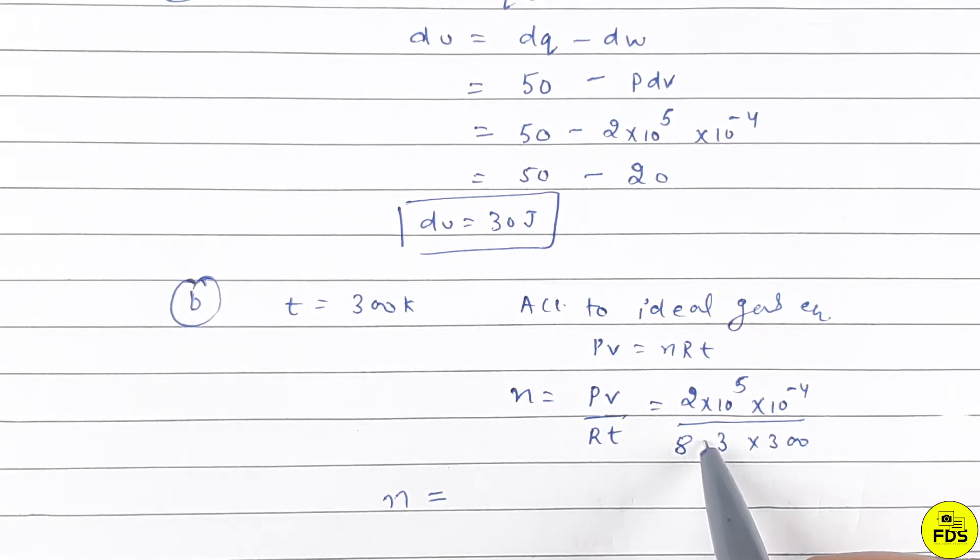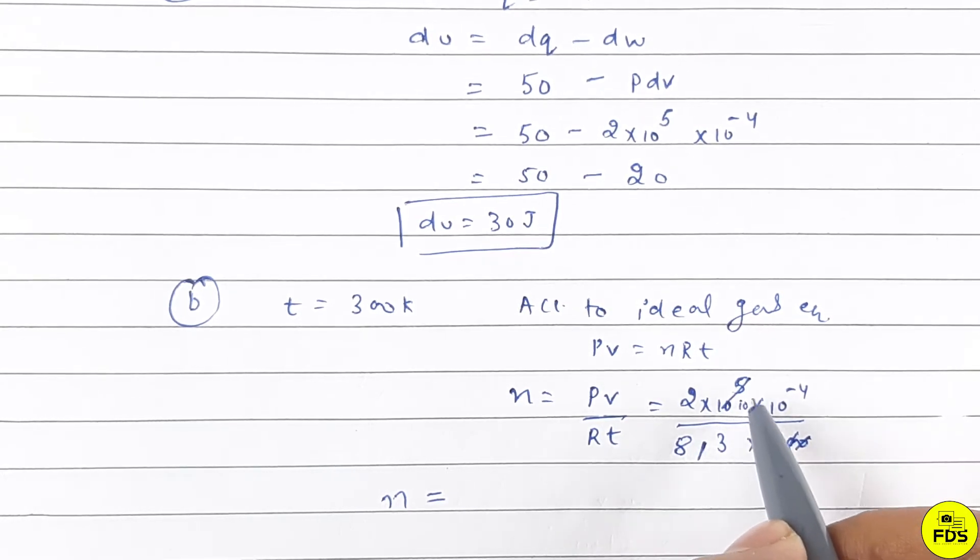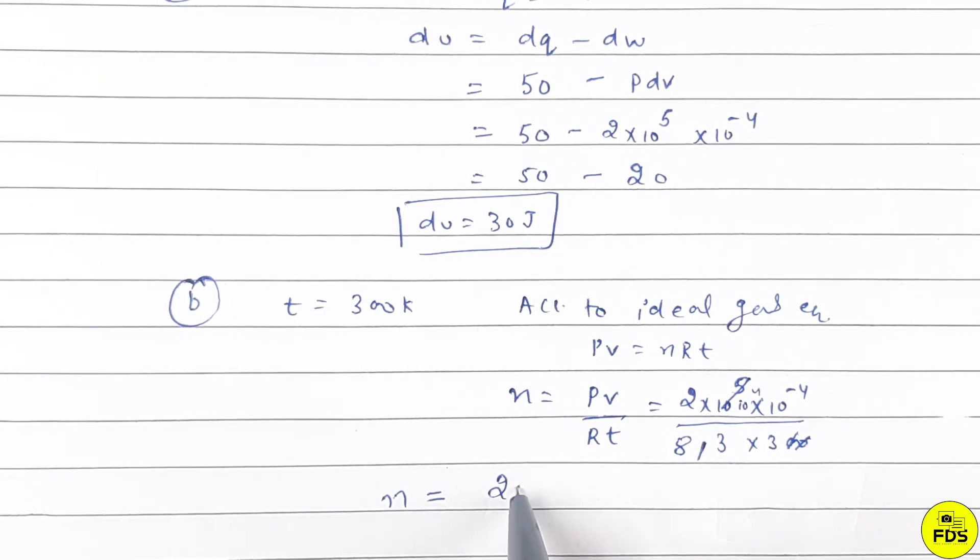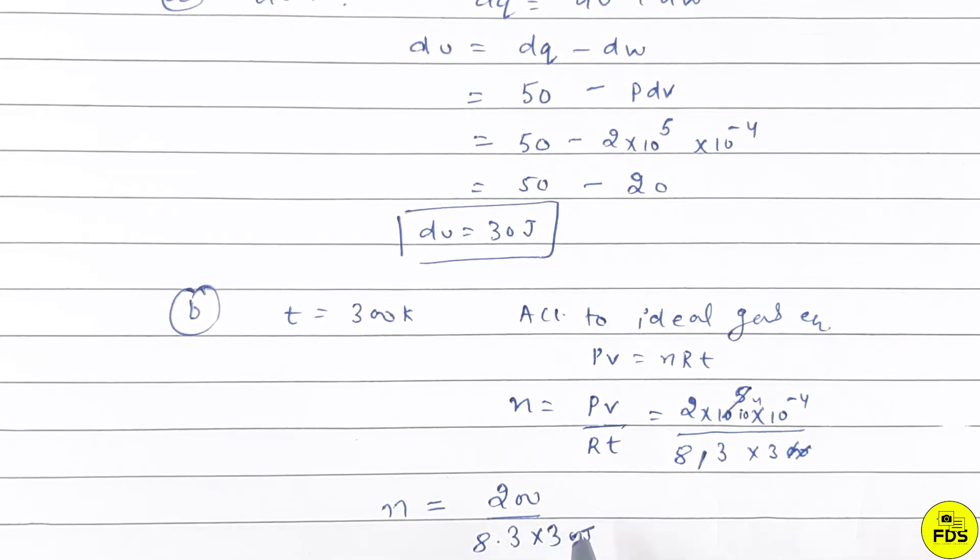So n value is 10 raised to power minus 4, which gives 20 over 8.3 into 300, which equals 0.008 moles.